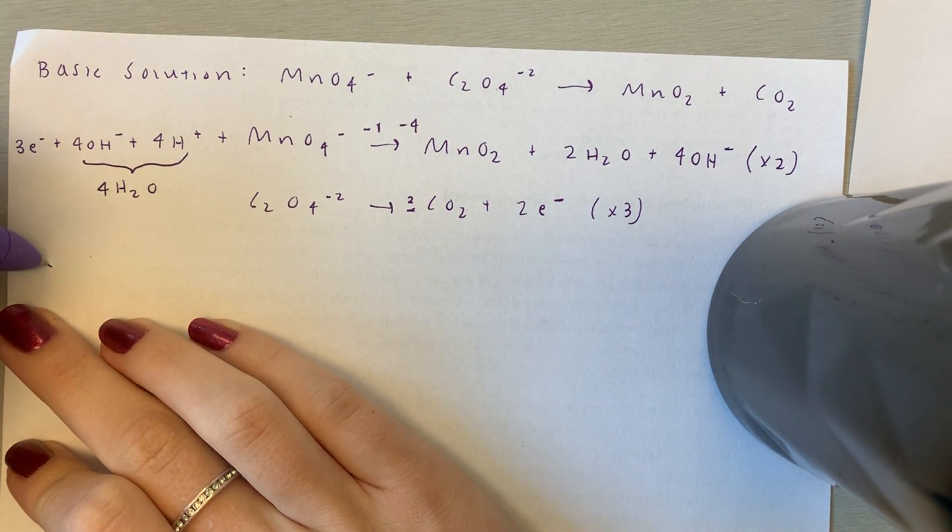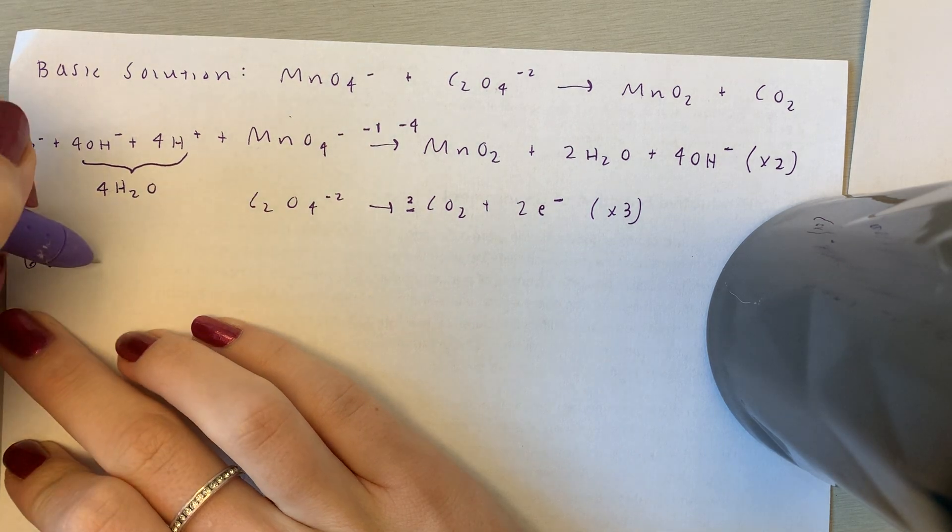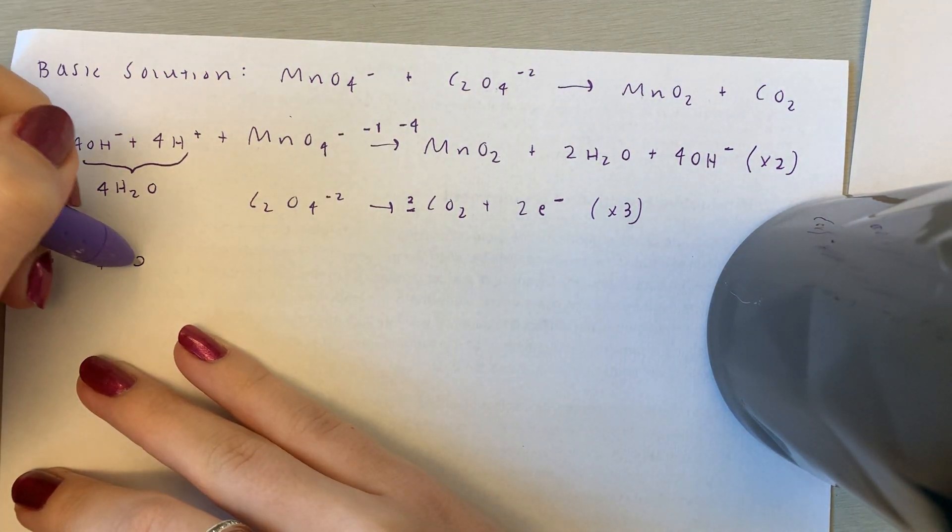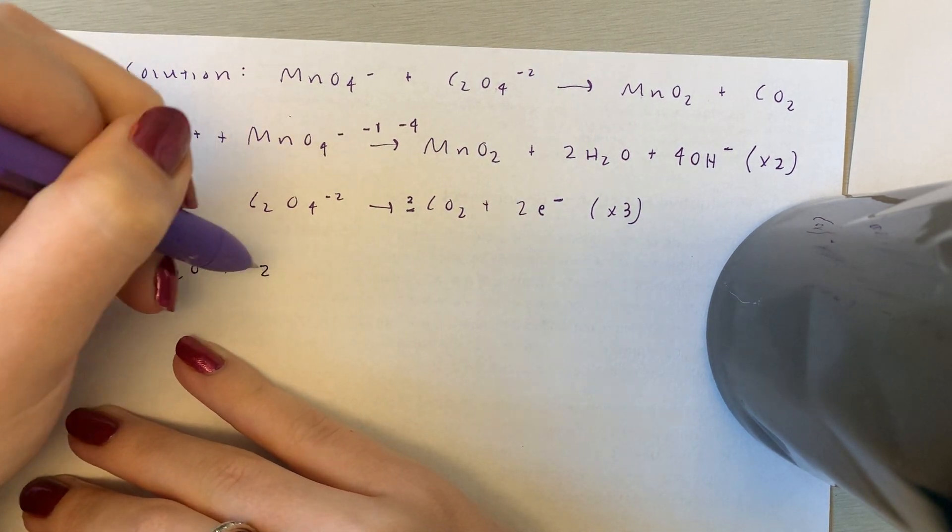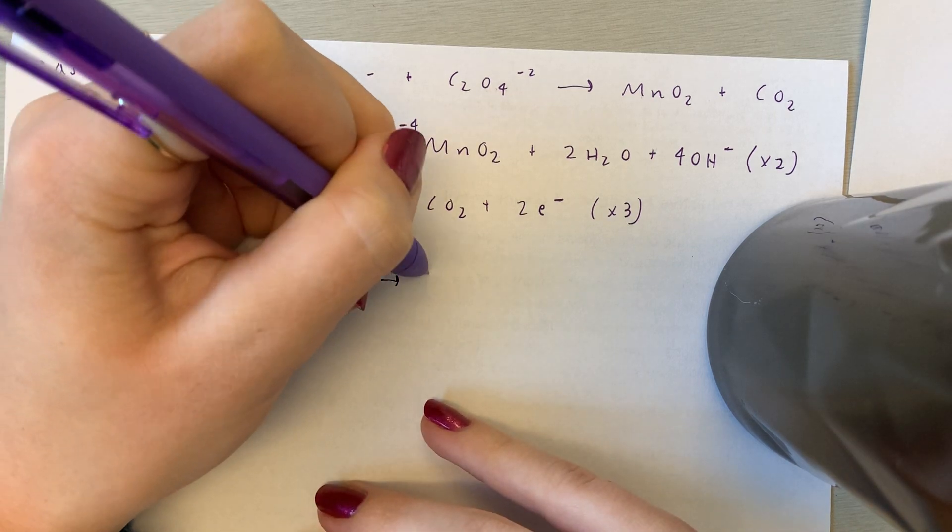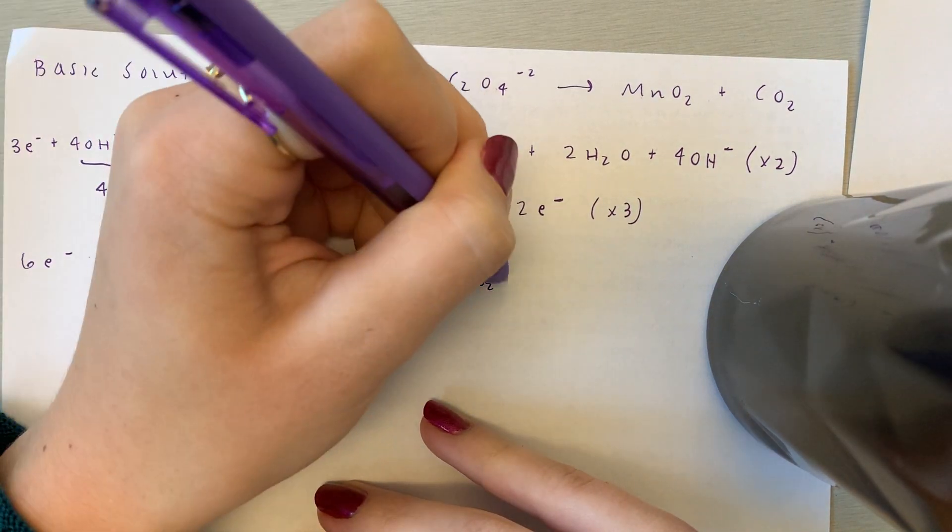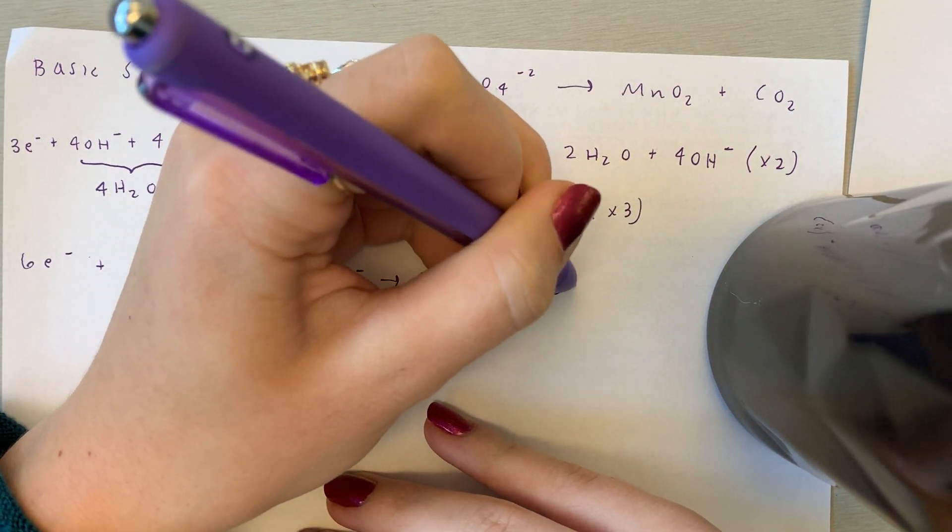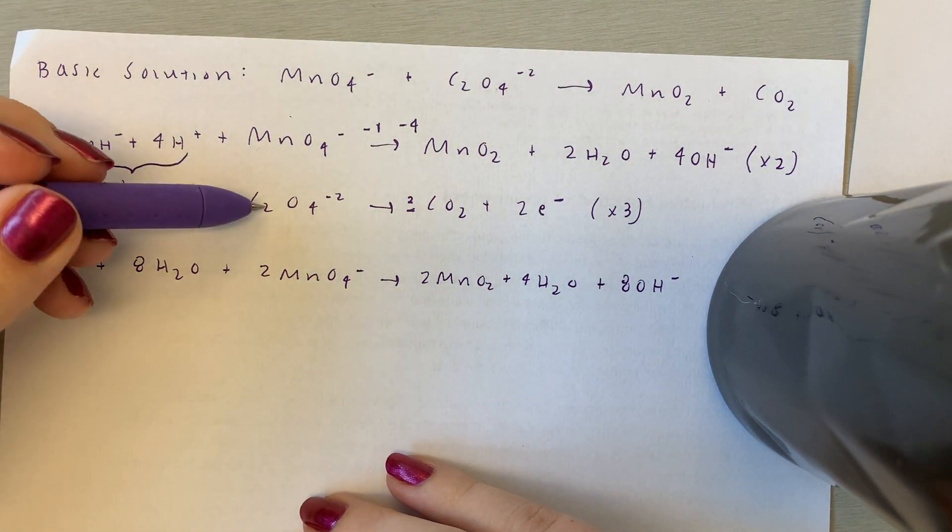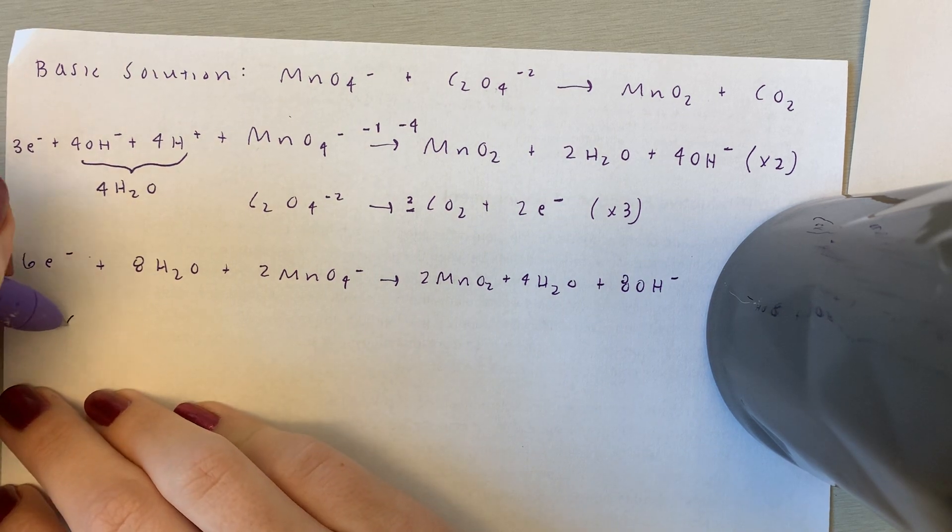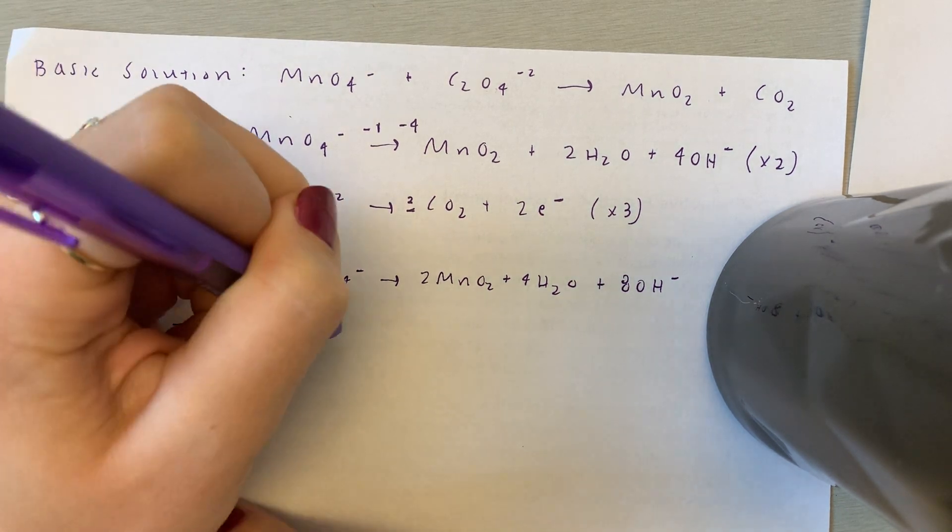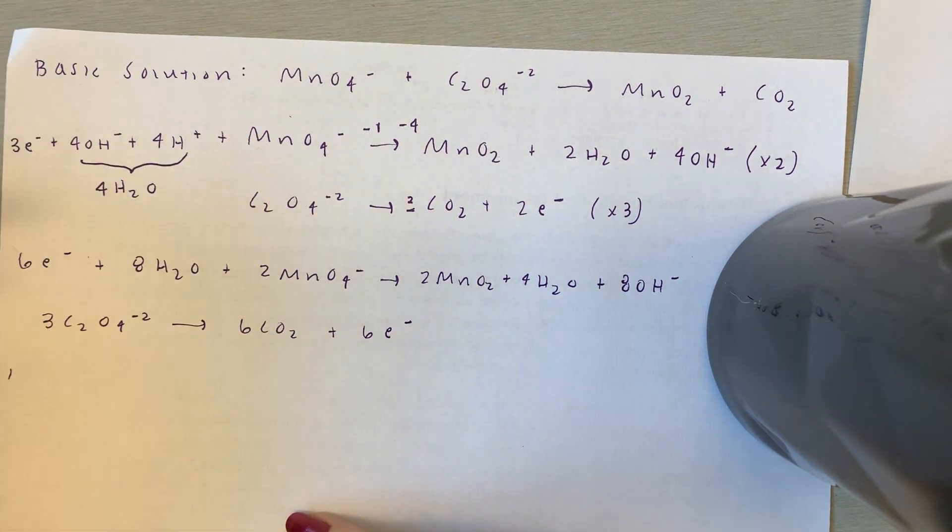So we're going to rewrite that, six electrons plus, I'm going to do four times two. So we have eight water molecules, two MnO4 minus, so two MnO2 plus four waters plus 8OH minus. Okay, now we're going to do the second one. We have 3C2O4 minus 2, 6 of the carbon dioxide, and now we have six electrons.